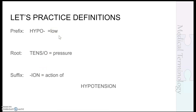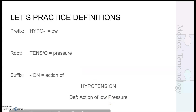'Hypo-' means low, 'tenso' means pressure, and '-ion' means action of. When we make an official definition we always start with the meaning of the suffix — 'action of' — so we start our definition with 'action of.' Then it makes the most sense to say 'low pressure.' You could also say 'pressure that is too low.' You can add filler words, but always start the definition with the meaning of the suffix.